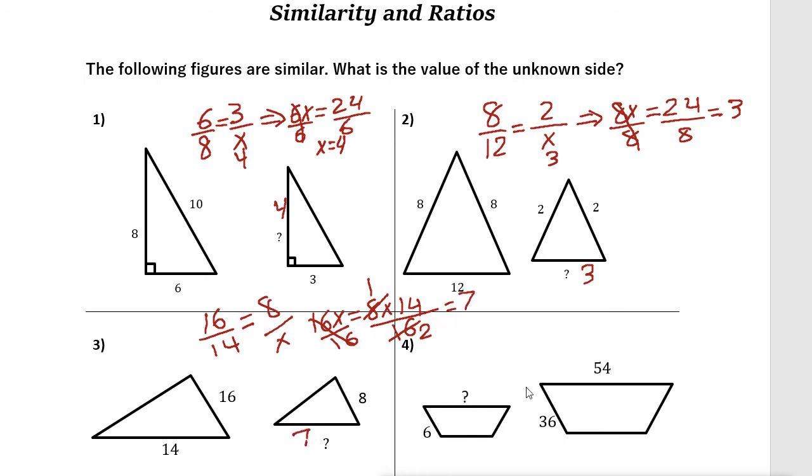The last one: these two are similar, so that means there's a relationship between these two—they are proportional. To write the proportion: 6 to the unknown side is the same thing as 36 to 54.